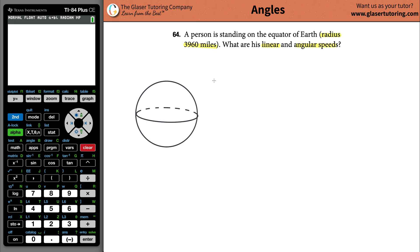Anyway, it tells us that the radius here is going to be 3960 miles. If you wanted to calculate the diameter you could, you just multiply this number by two. We don't really need it though. In any case, we got to find the linear and angular speeds.